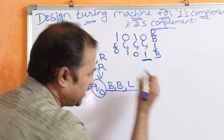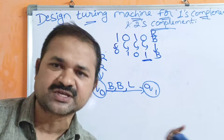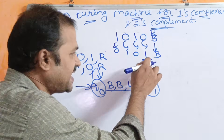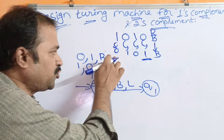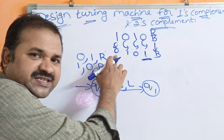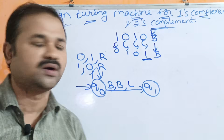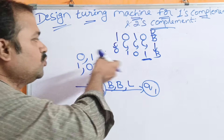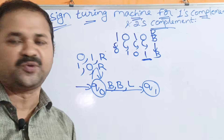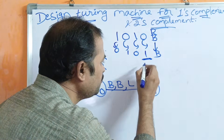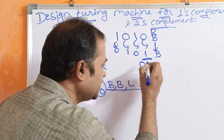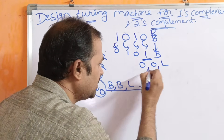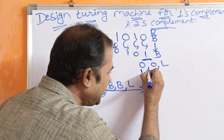Now the head is at this location and the state is q1. We can stop the process here — this is the Turing machine for 1's complement. But in most textbooks, it is given that we traverse back to zero, because we started at the most significant bit, so it is better to end there. On q1, if we read 0, keep the content as it is and move the head towards the left.